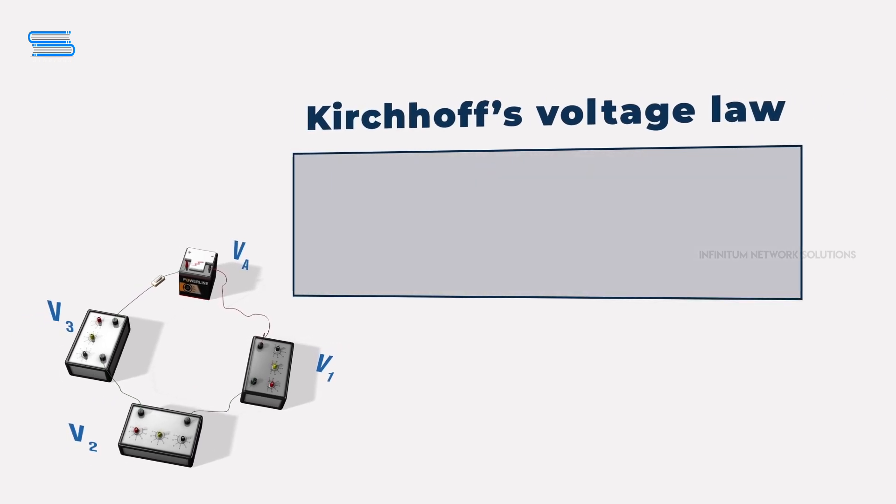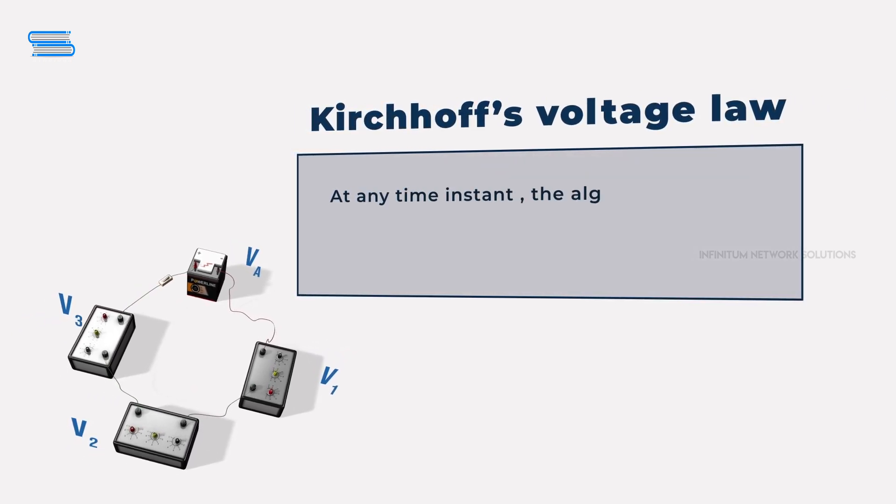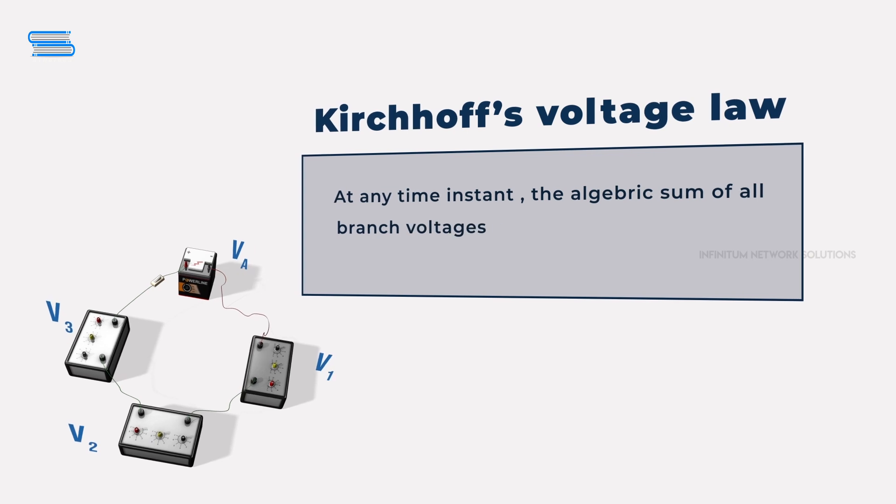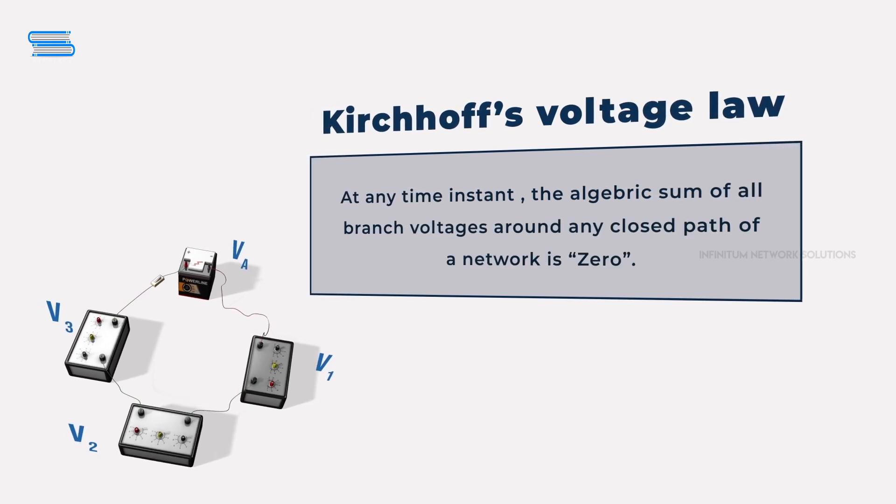Kirchhoff's Voltage Law states that at any time instant, the algebraic sum of all branch voltages around any closed path of a network is zero.